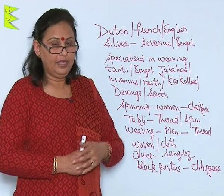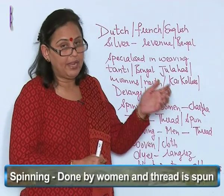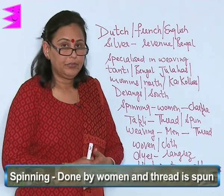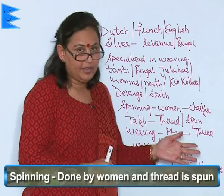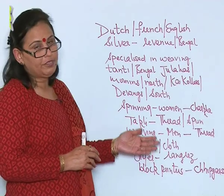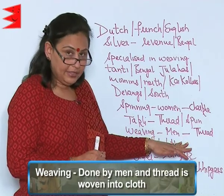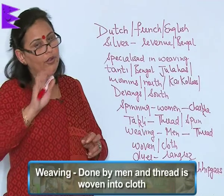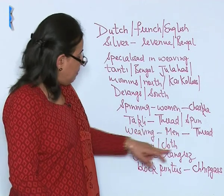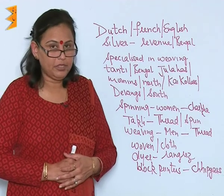The weaving of cloth actually undergoes two main processes. The first process is called spinning, which is generally done by the women in India on the charkha or the takli. Here the basic work is that the thread is spun. The next process involves the weaving, which is done by the men, where the thread is woven into cloth.